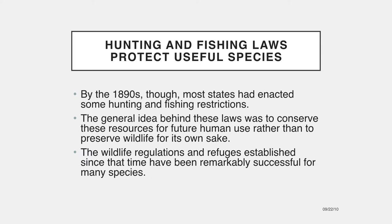In 1874, a bill was introduced in the U.S. Congress to protect the American bison, whose numbers were falling dramatically. This initiative failed, partly because most legislators could not imagine that wildlife so abundant and prolific could ever be depleted by human activity. By the end of the 19th century, bison numbers had plunged from some 60 million to only a few hundred animals. By the 1890s, most states had enacted some fishing and hunting restrictions, though the general idea was to conserve the resource for future use rather than to preserve wildlife for its own sake.